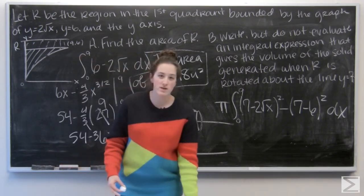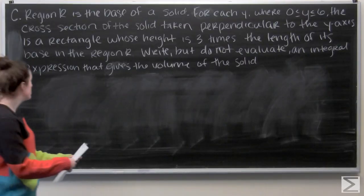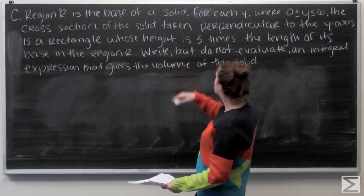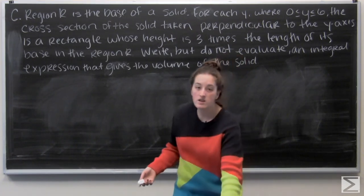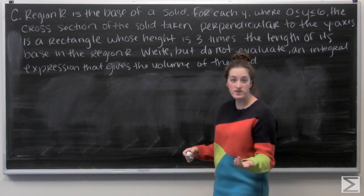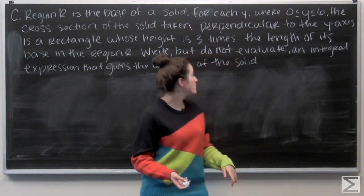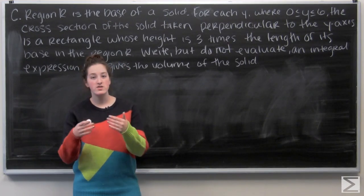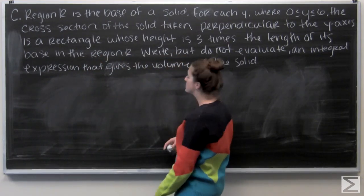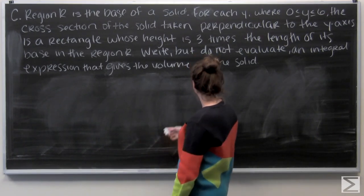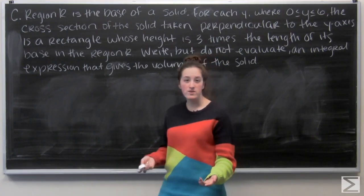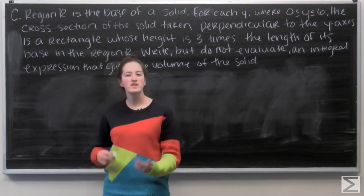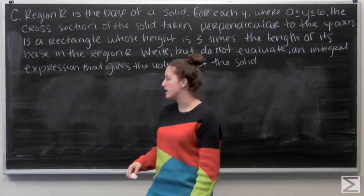Part C states that region R is the base of a solid. For each y between 0 and 6, the cross-section of the solid taken perpendicular to the y-axis is a rectangle whose height is 3 times its base. We need to write, but not evaluate, an integral expression for the volume of this solid. Let's start by drawing it to get an idea of what we're looking at.